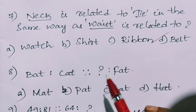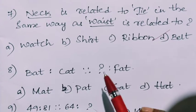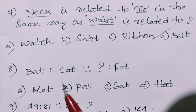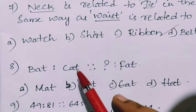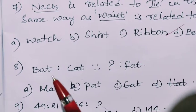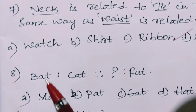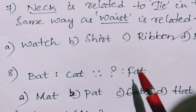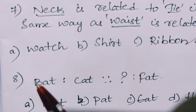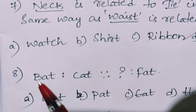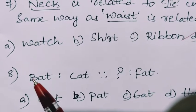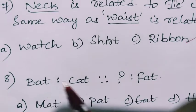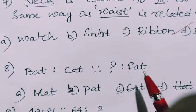Next, one more type of question. See here, bat, cat, what? Fat. So when you observe here, A-T is common in all the three words. Only the first letter is changed. So we see alphabetical order. After B it is C, so it is following the alphabetical order. The other two letters are common for all the things.